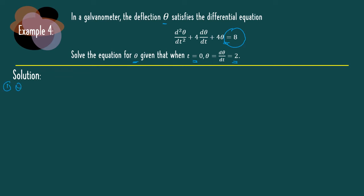Firstly, we find theta h from the homogeneous equation: theta double prime plus 4 theta prime plus 4 theta equal to 0. The characteristic equation is lambda squared plus 4 lambda plus 4 equal to 0. Factorizing, we have equal roots: lambda 1 equal to lambda 2 equal to minus 2. Since we have equal roots, our general solution is theta h equal to a plus bt times exponent minus 2t.